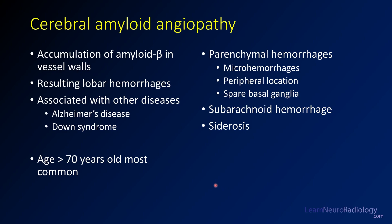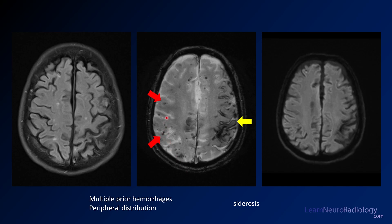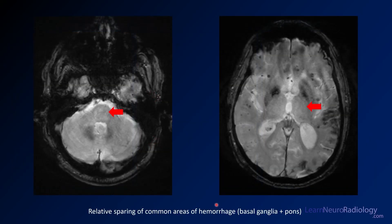This is a case of cerebral amyloid angiopathy, which is an abnormal accumulation of amyloid in the vessel walls. As a result, you get these lobar hemorrhages, and they're often peripheral at the gray-white junction. They tend to spare the areas that you see in hypertensive hemorrhage, so you see less in the basal ganglia and less in the pons. Most frequently, these patients are going to be over 70 years old — as in this case, this patient was 80 years old. The red arrows denote these peripheral hemorrhages at the gray-white junction, and you see the siderosis on the contralateral side, coating the brain, with relative sparing of the pons and basal ganglia.